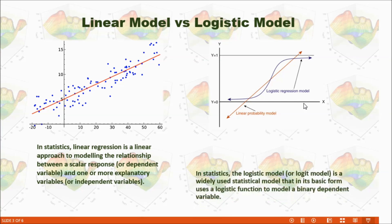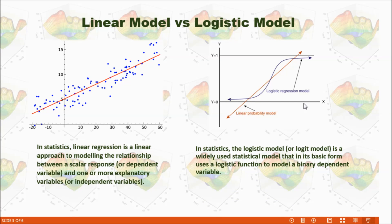In this case, we use logistic regression. In this model, we can draw a curve to show the probability of the outcome between 0 and 1. When our credit score is high, we have a high probability of getting approved, but it's not 100% guaranteed.